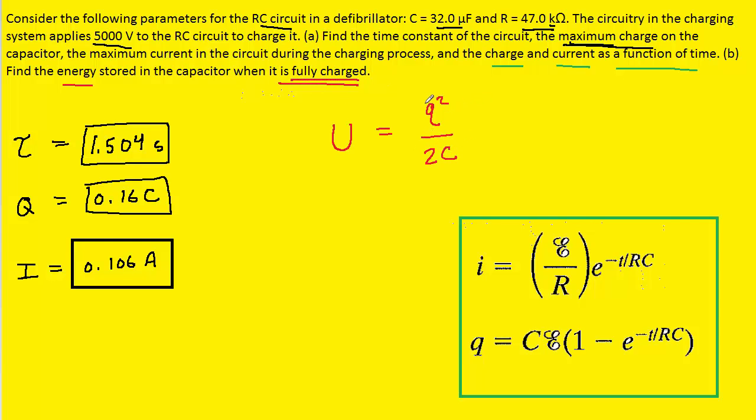Remember, when it is fully charged, we have a maximum charge on the capacitor. So, rather than using the lowercase q, we can use the uppercase Q. And we determined the uppercase Q earlier in the problem. That had a value of 0.16 coulombs, which we can plug in for the maximum charge. And then we'll divide it by 2 times the capacitance, which was the 32 times 10 to the minus 6 farads. And when we work this out, we end up with exactly 400 joules. And so, this is the correct answer for the energy stored in the capacitor when it is fully charged.